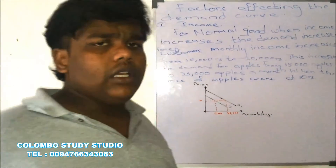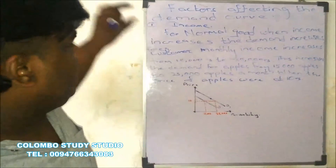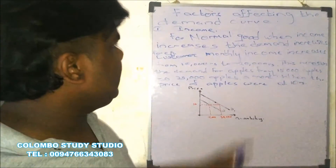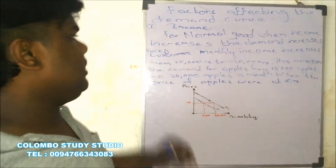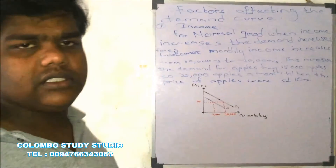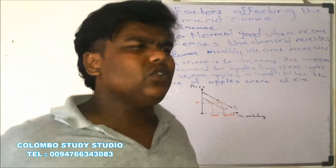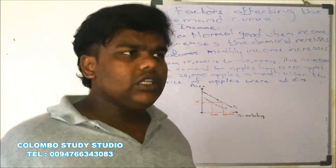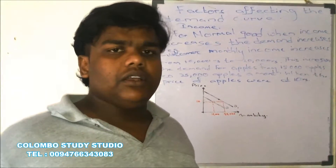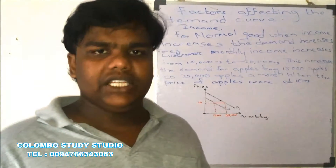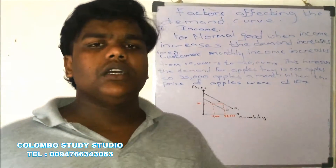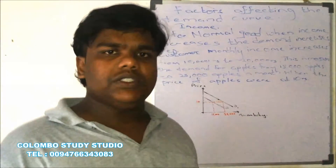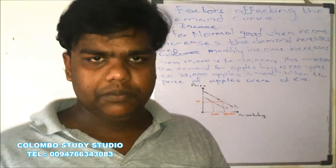For normal goods, when income increases, the demand increases. Normal goods are goods that have a direct and positive relationship with income — that is, normal goods have a positive relationship between income and demand.